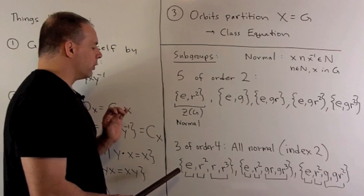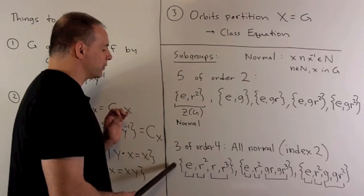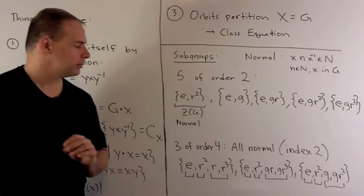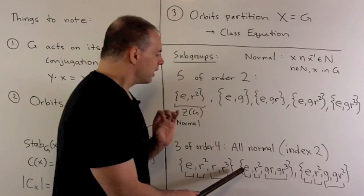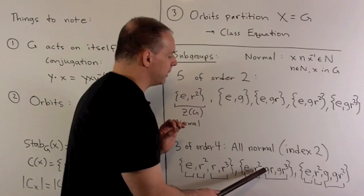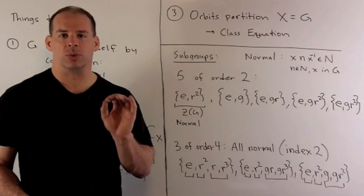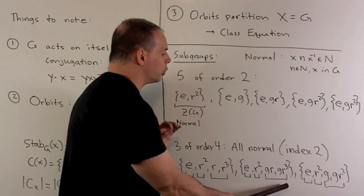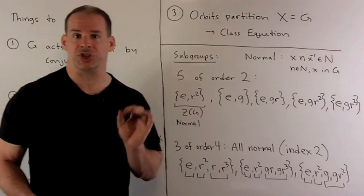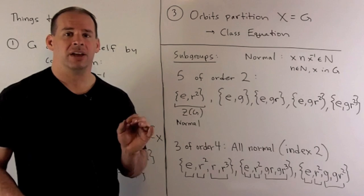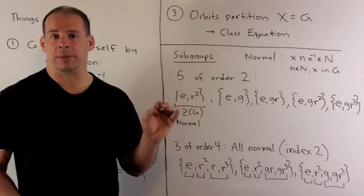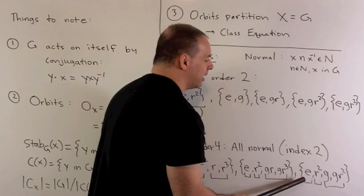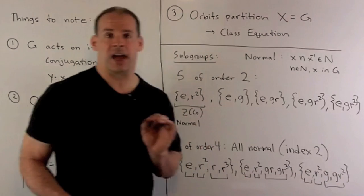Finally, we have three subgroups of order four. These are always normal — in this case they're all index two, since eight divided by four is two, and index two automatically implies normal. If we take the rotations — just the powers of R — you'll note that this breaks up into three conjugacy classes, so it's normal. Then if we take the flips in Y equals X, Y equals minus X, and throw in rotation by 180 degrees, that gives us a subgroup, and again it breaks up into conjugacy classes for G. Finally, if we take the subgroup with flipping the x-axis, flipping the y-axis, and our rotation by 180 degrees, we get another subgroup, and again it's a union of conjugacy classes of G.